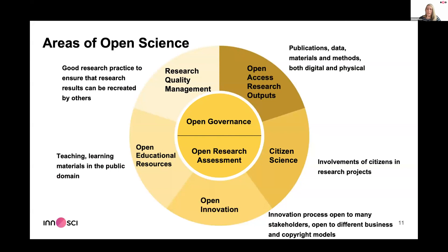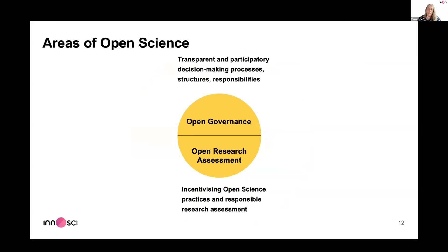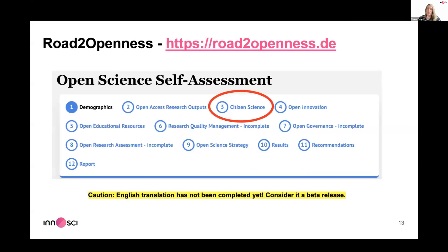We look at a comprehensive list of open science practices. We cover open access research outputs — publications, data, materials and methods — including both digital and physical outputs. We look at citizen science, open innovation, open education resources, and research quality management — a term we use instead of reproducibility as it's more familiar. We also look at open governance, meaning transparent institutional governance processes, and open research assessment, which is about incentivizing open science practices.